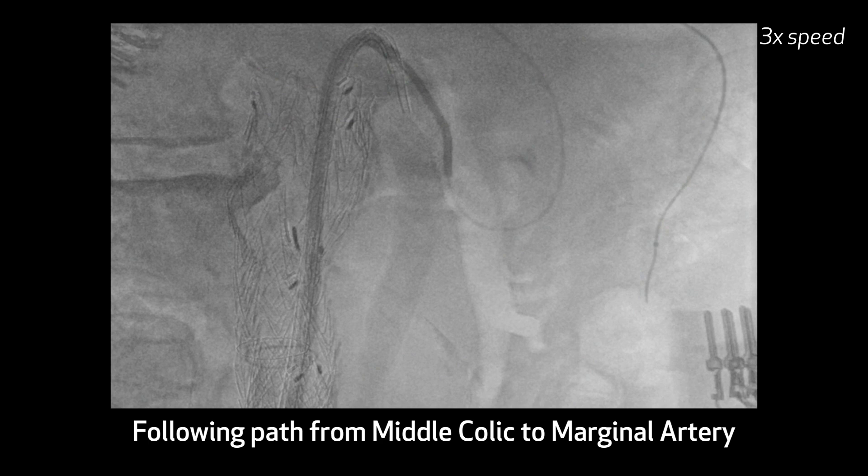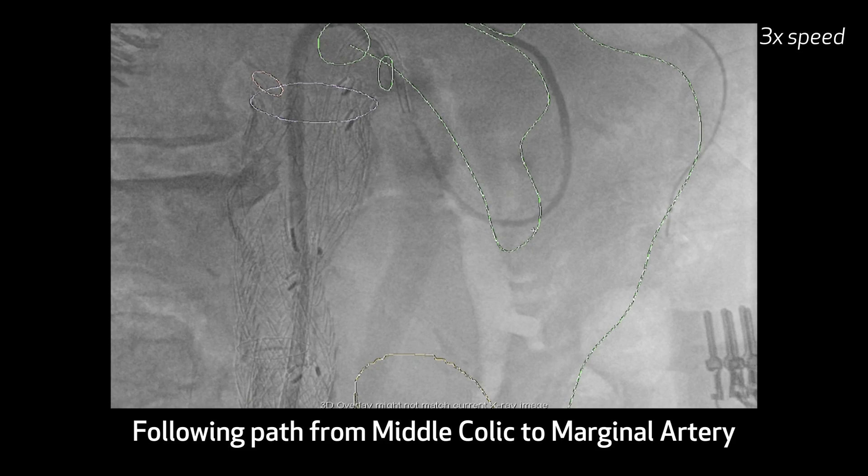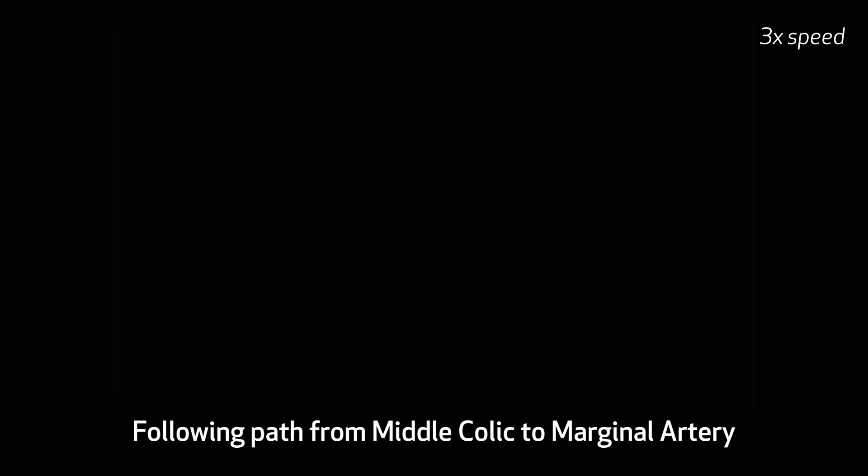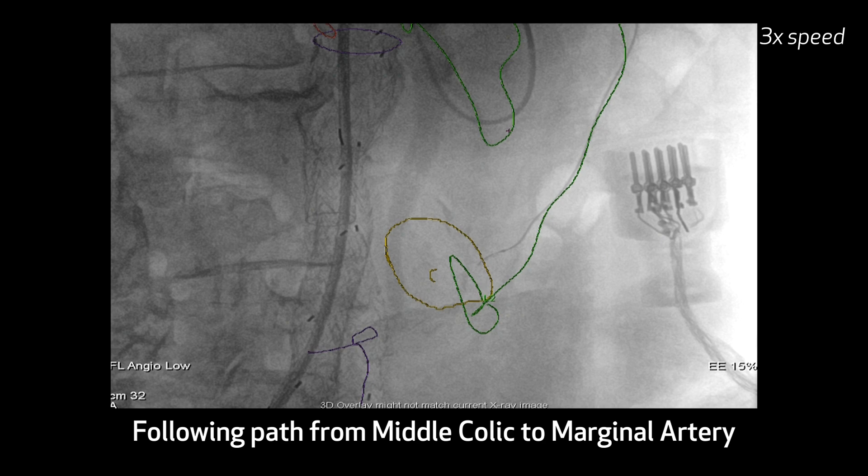The nice thing about this is you minimize the amount of dye — you just really follow that tract. Occasionally these wires go down a lot of side branches. You've got to disengage them, but by and large, if we follow the tract which we've drawn off the CT scan, it's remarkably good.